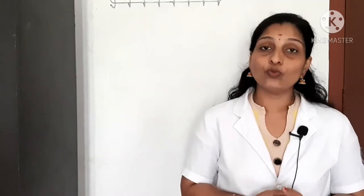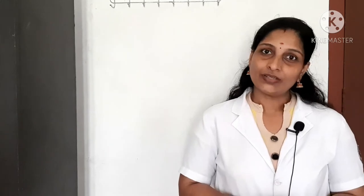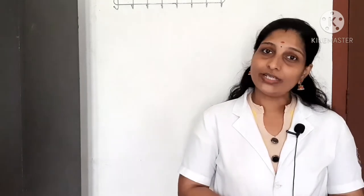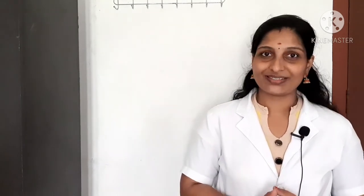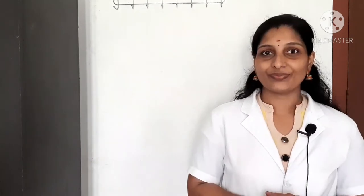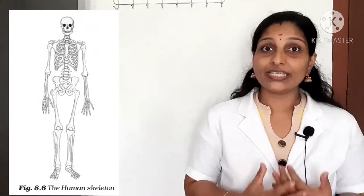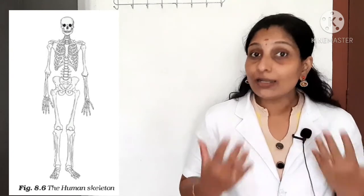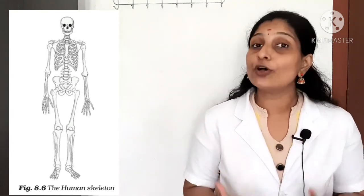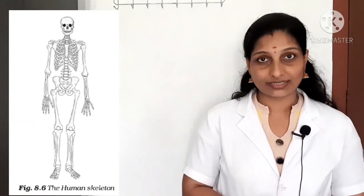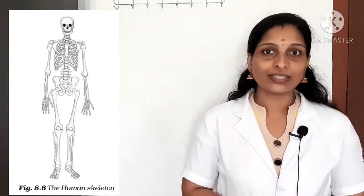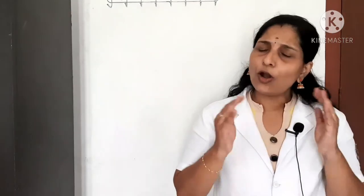First of all, we have discussed about different types of movable joints in our body. The three main types of movable joints are ball and socket joint, pivotal joint, and hinge joint. We also discussed about the framework of bones, known as the skeletal system. The skeletal system gives shape to our body, helps with movement, and protects internal delicate organs such as the brain, heart, and lungs.